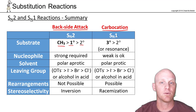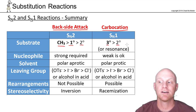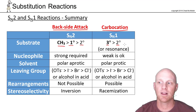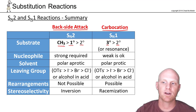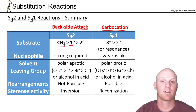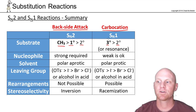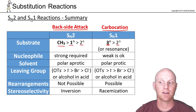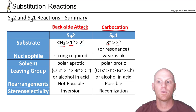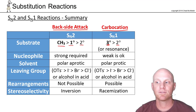For SN1, which is all about forming the best carbocation possible, tertiaries are the fastest, secondaries second, and then primary and methyl generally don't form unless they're resonance stabilized. I bolded methyl and primary for SN2 because they can only do SN2 not SN1, provided there's no resonance possible. And I highlighted tertiary for SN1 because you can't do SN2 with a tertiary halide — backside attack is completely blocked.